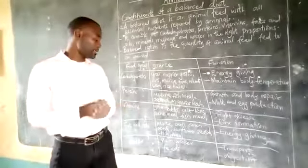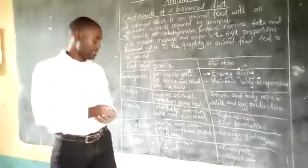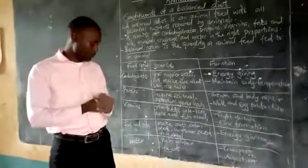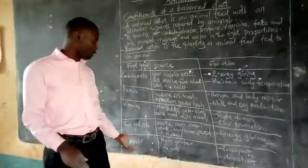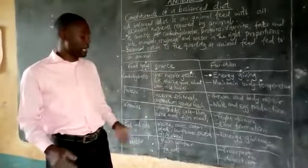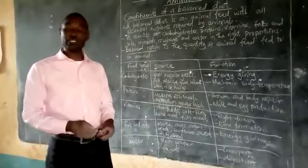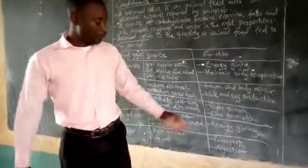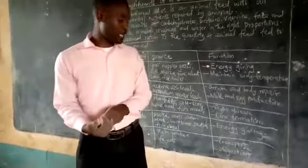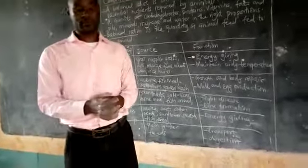Then lastly we have water. Water we get from plain water, that is from rivers and from lakes, from dams and so on. Water can also be found in the feeds that are given to animals, especially the pastures which are fed on directly by the animals. The function of water is to assist in transport and digestion.